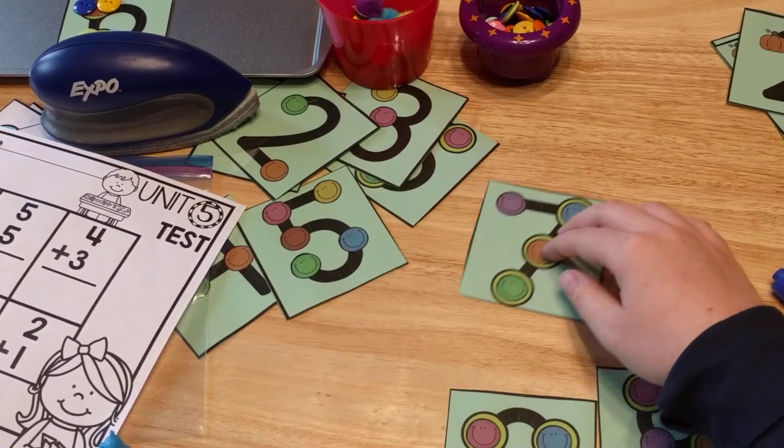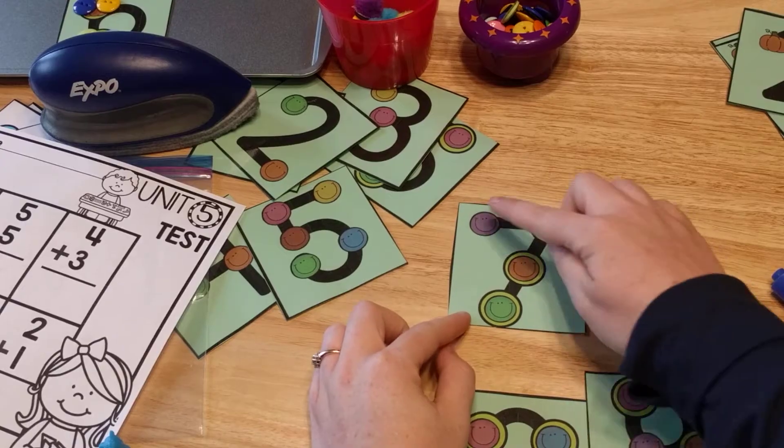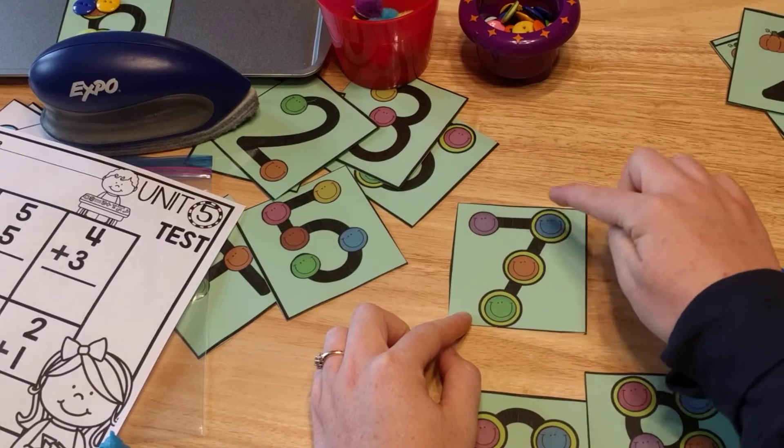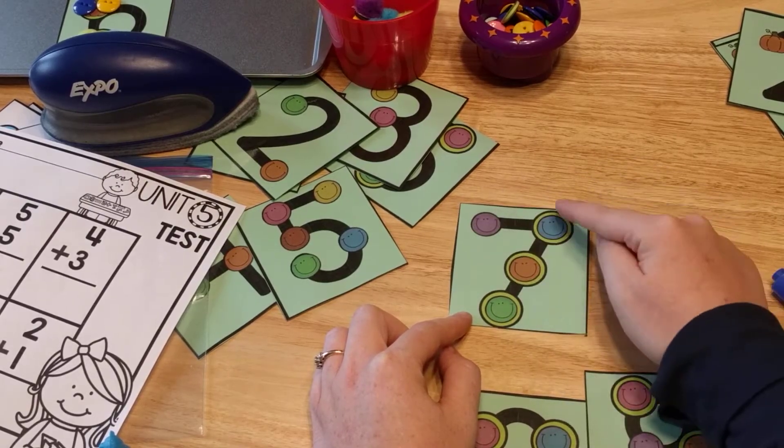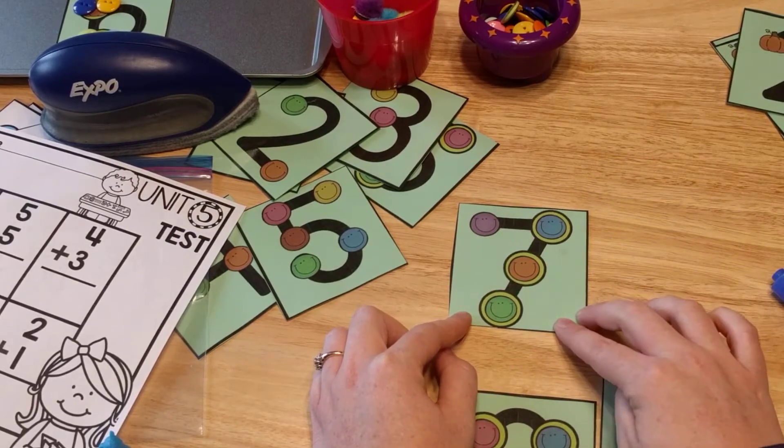Then for like the number seven, they're going to do one, two, three, four, five, six, seven. So if it doesn't have the double circle, you just touch it once. If it has the double circle, you touch it twice.